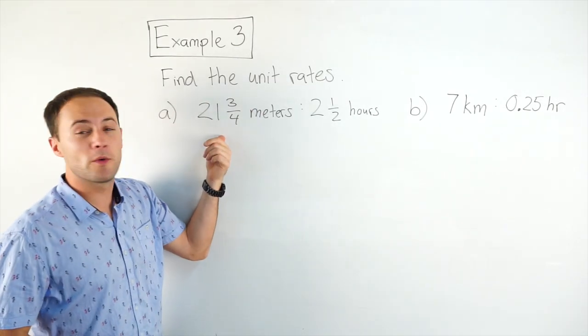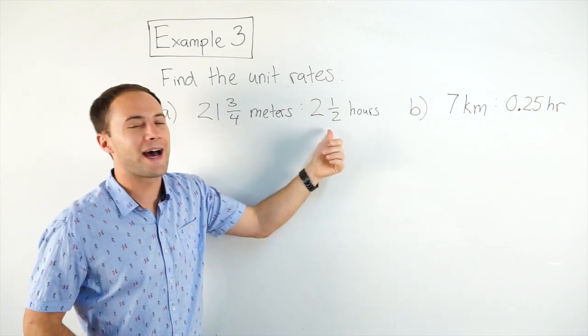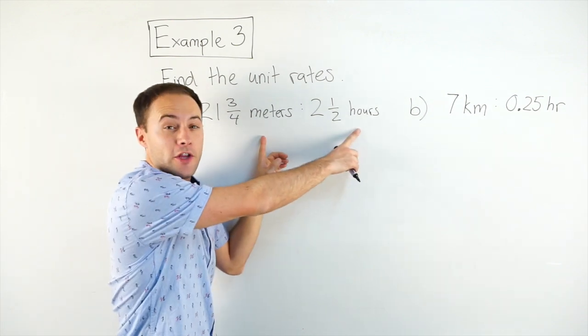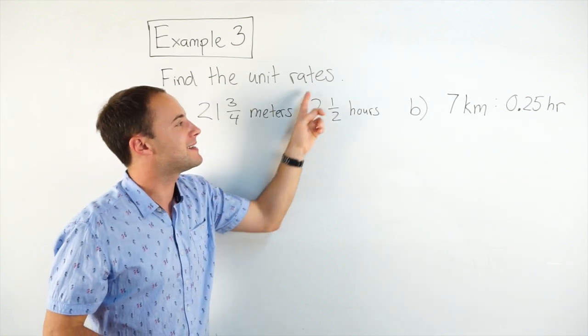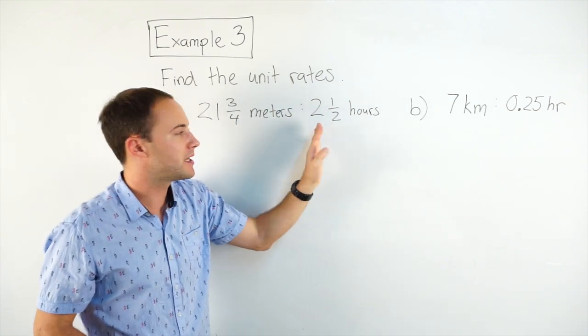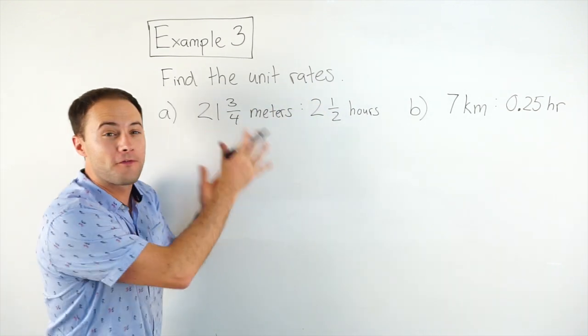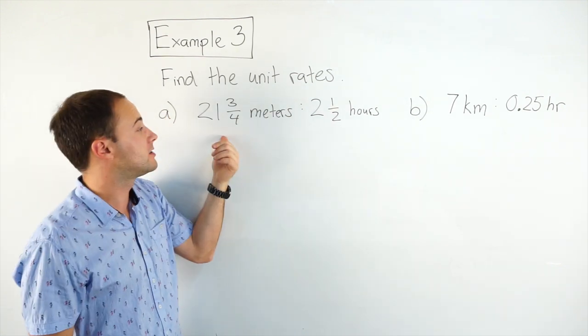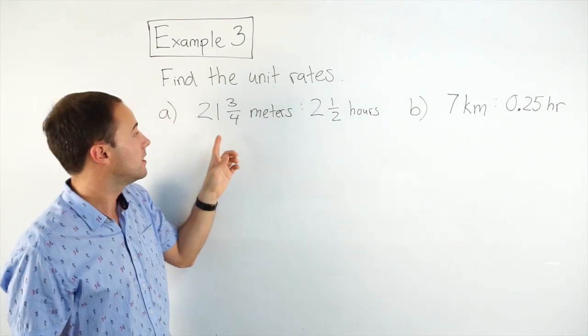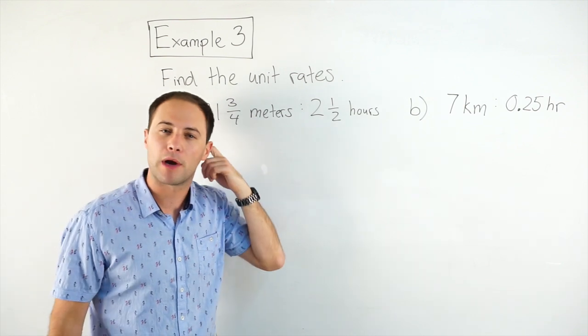Find the unit rates. So 21 and 3/4 meters to 2 and 1/2 hours. Notice we have different units, which is important for rates. And for a unit rate, this needs to become 1 hour instead of 2 and 1/2. So what I'm going to do first is, I don't want to deal with mixed numbers. You could change these to decimals. That would be easy. But I'm going to change them just to improper fractions.